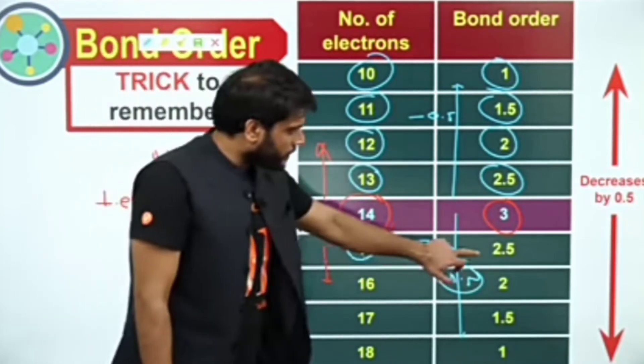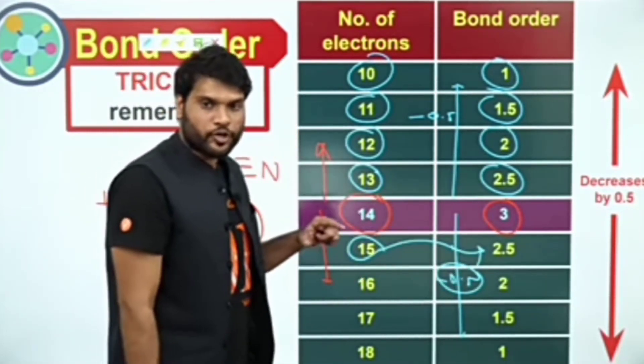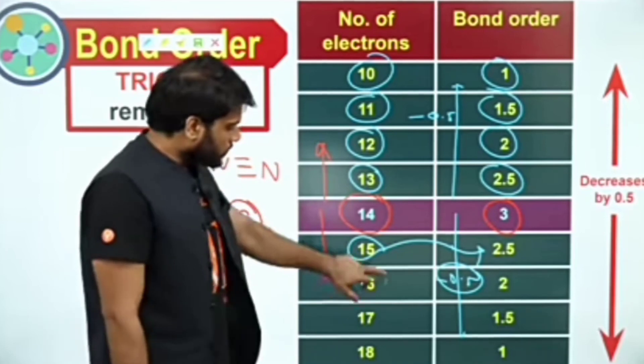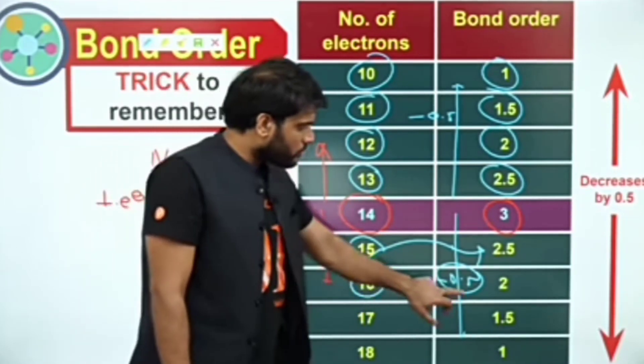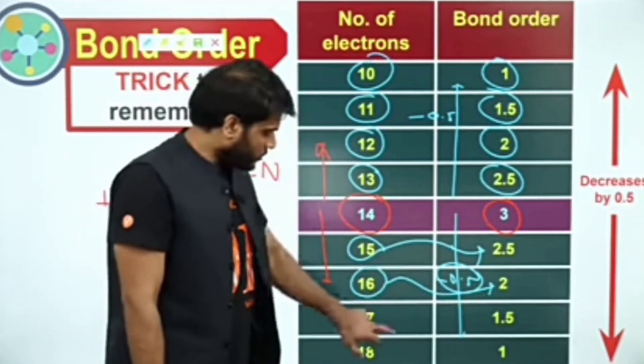If you have a total of 15 electrons, then bond order is 2.5. If the total number of electrons is 16, bond order will be 2. 17 electrons gives 1.5, and 18 electrons gives bond order 1.